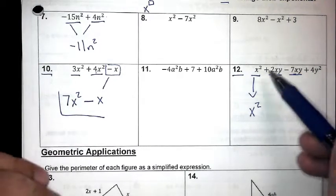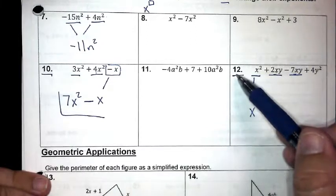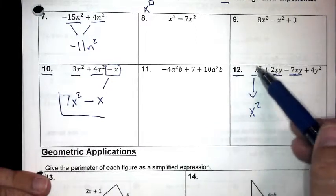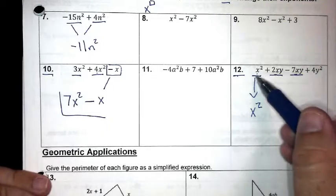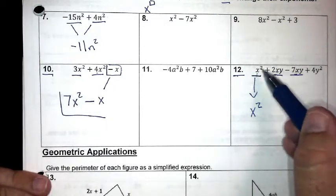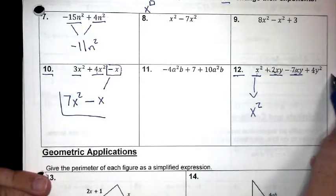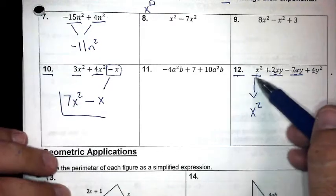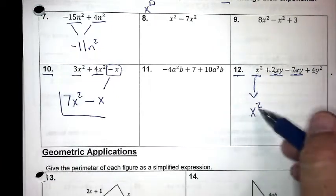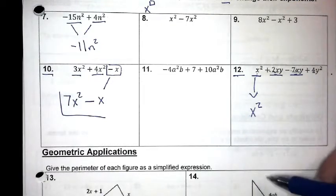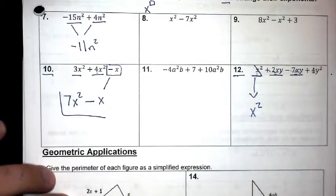Looking at problem number 12 on page two. We always start with alphabetical order, and x comes before y, so we start with x. I see an x squared, so I underline it and ask myself: are there any other terms with x squared? The answer is no, so I draw an arrow and bring it down — it has nothing to combine with, so I leave it and scratch it out so I don't get confused.